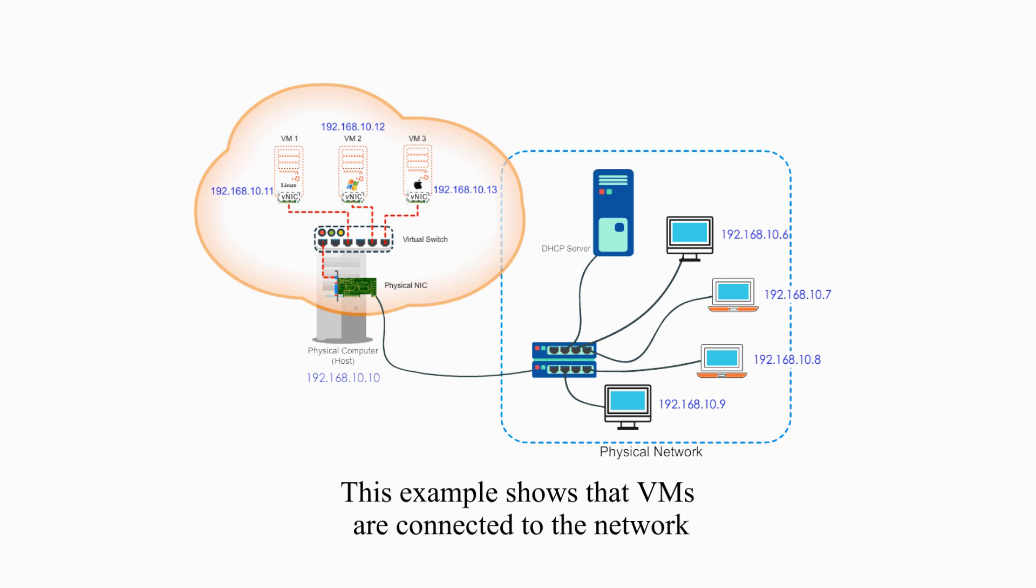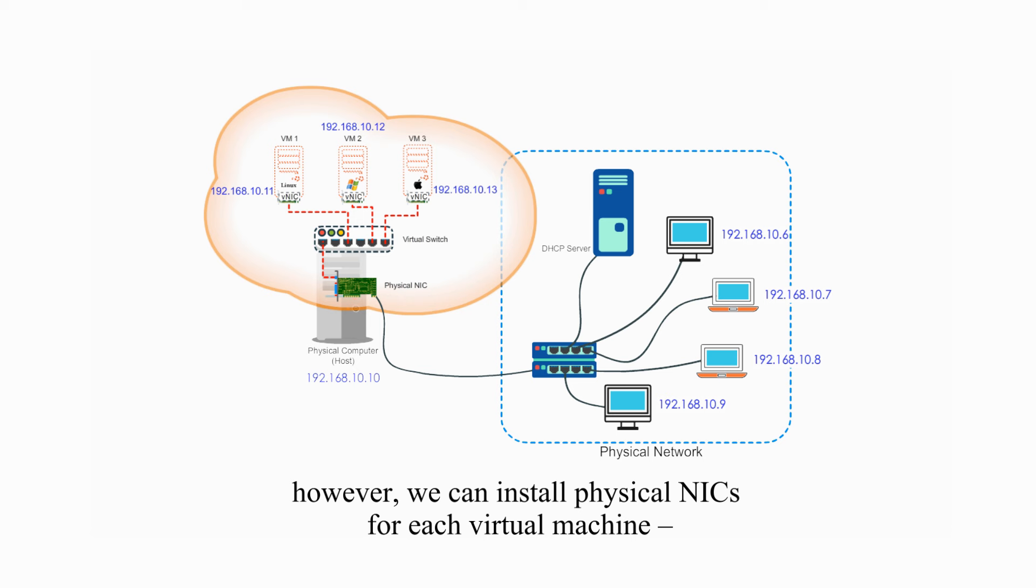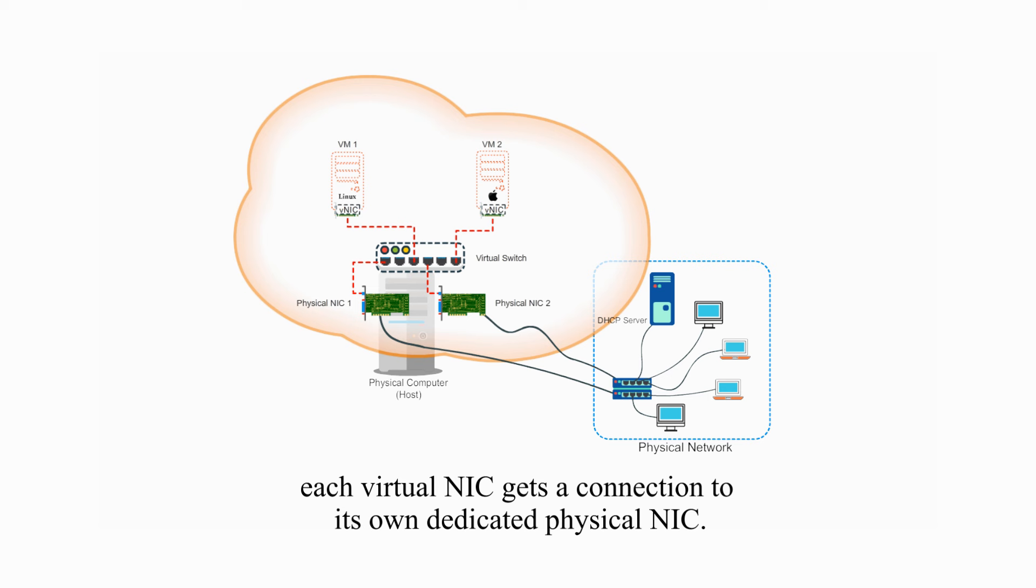This example shows that virtual machines are connected to the network through the host-only NIC. However, we can install physical NICs for each virtual machine. Each virtual NIC gets a connection to its own dedicated physical NIC.